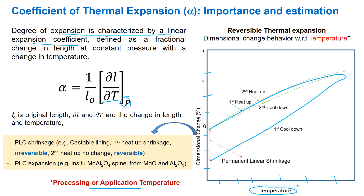Here I have given one typical example of the reversible thermal expansion behavior of castable lining. After fast heating up, if we further evaluate at room temperature for second heating and cooling, there is no permanent change and it follows a reversible phenomenon. In fast heating, it follows one path turning back, and this irreversible behavior is related to linear shrinkage.